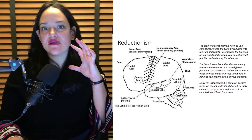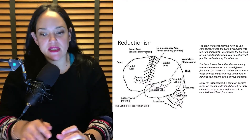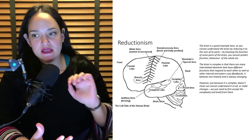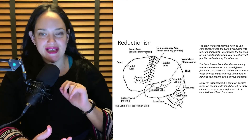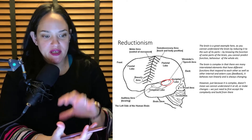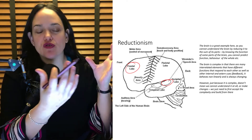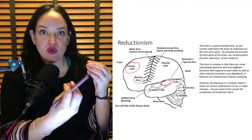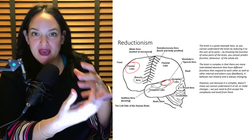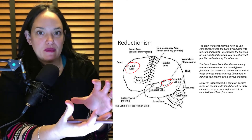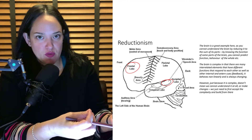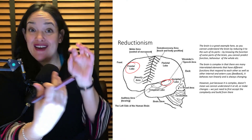An even better example is our study of the brain. I teach anatomy sometimes and I love studying the brain, but I get frustrated because often we say this lobe does this, that lobe does that, this region does that — and that's just not how the brain works. It's not like Wernicke's area is working in isolation, or our frontal lobe is working in isolation. There's lots of communication between different parts of the brain, and we know that even if we remove parts of the brain, other parts can compensate because it's a system.